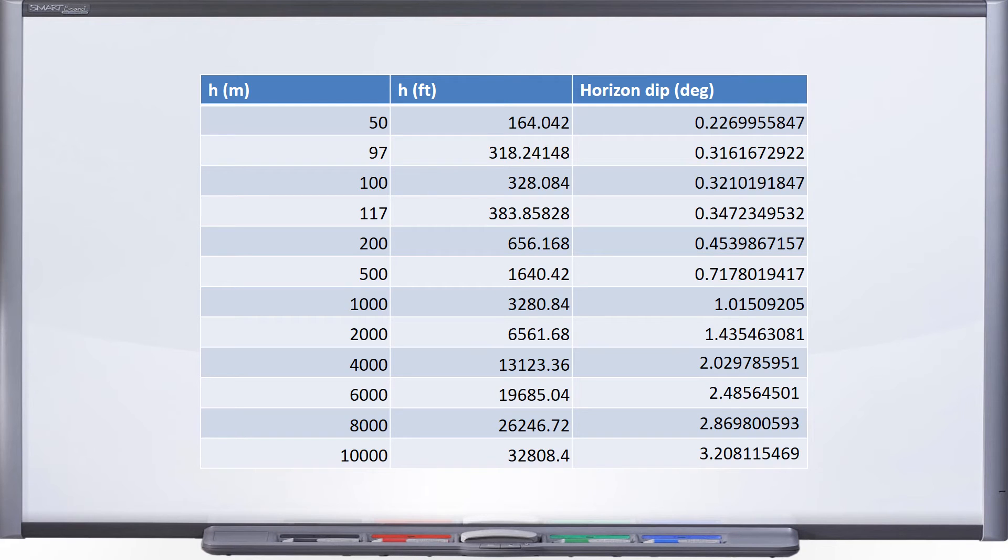And I went all the way up to 32,800 feet, which might be interesting if you're going to ask yourself, hey, if I'm in an airplane, does the horizon rise to eye level? Well, according to this, the horizon is expected to be 3.2 degrees below eye level if you're up at altitude in an airplane. So maybe check that out with the Theodolite app on your phone next time you take a flight. See if it's really true.